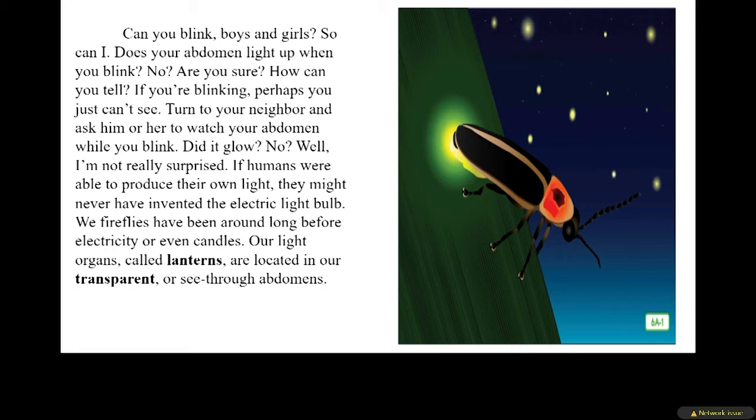Can you blink, boys and girls? Does your abdomen light up when you blink? If you're blinking, perhaps you just can't see. Turn to your neighbor and ask him or her to watch your abdomen while you blink. I'm not really surprised — if humans were able to produce their own light, they might never have invented the electric light bulb. We fireflies have been around long before electricity or even candles. Our light organs, called lanterns, are located in our transparent or see-through abdomens. Lanterns are lights that have coverings over the source of the light, usually made of glass.